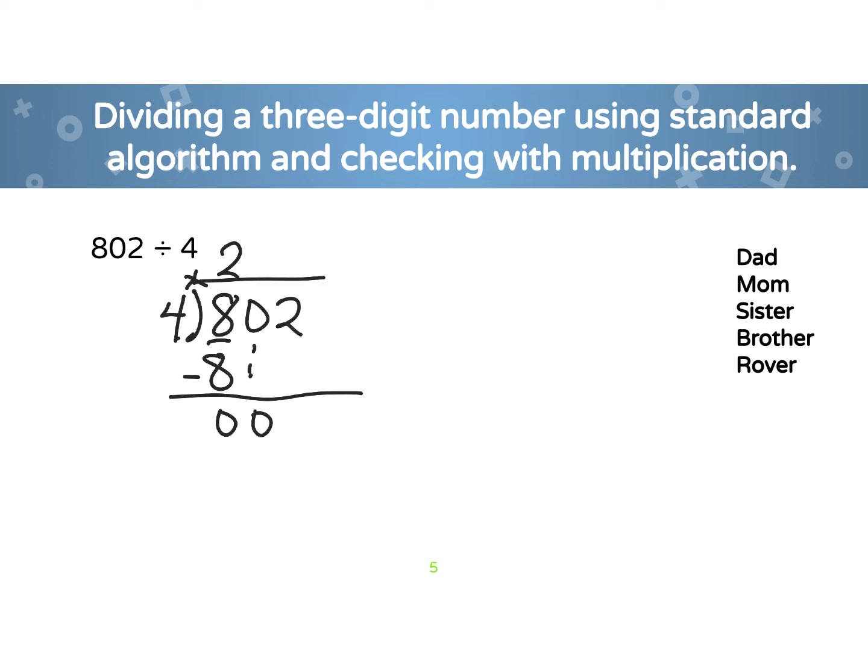So now here's the tricky part. So we have 0. 0 cannot be divided by 4. So we have to put a 0 to hold our place value. And then we bring down our 2. 2 divided by 4. We cannot do that either. So we put another 0. And then 0 times 4. We have 2 as remainder. So now we're going to check this to see if 200 times 4. And then add in our remainder to check.